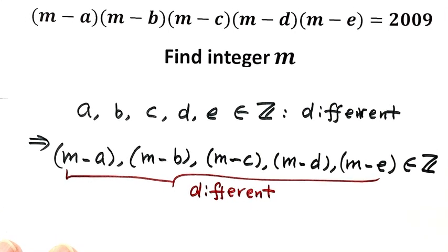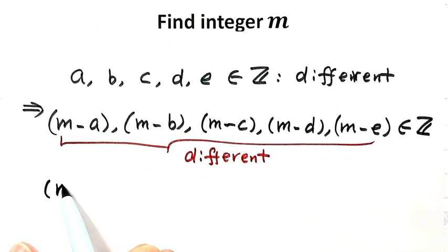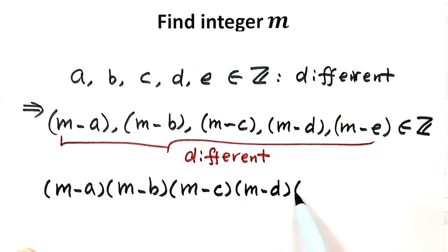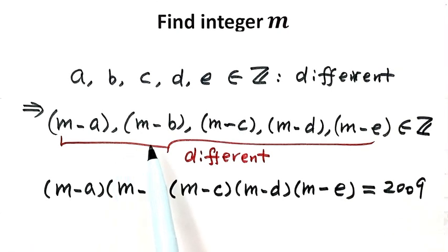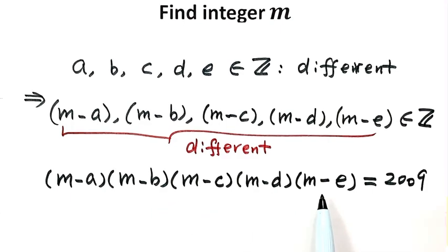So now let's write down the given equation: (m minus a)(m minus b)(m minus c)(m minus d)(m minus e) equals 2009. Because there are five different integers on the left, that means 2009 equals the product of five different integers.